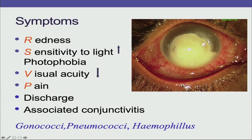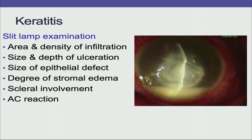Symptoms include redness, increased sensitivity to light or photophobia, decreased visual acuity, pain, discharge, and associated conjunctivitis. Conjunctivitis occurs more often when the organism is gonococci, pneumococci, or Haemophilus. Whenever a case of microbial keratitis presents, however small or large, it is important to do a good slit lamp evaluation and fluorescein staining.